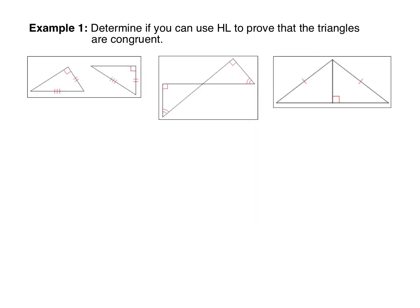Let's practice identifying if you can use HL to prove triangles are congruent. First check that you have a pair of right triangles — and in this first picture, I do; there's a right angle here and there. Then check for the hypotenuse and leg. I'll mark those H for hypotenuse — they're congruent because each has three tick marks. The side with two tick marks is a leg. So we have two right triangles with congruent hypotenuses and a congruent leg; therefore these triangles are congruent by the Hypotenuse-Leg theorem, HL.